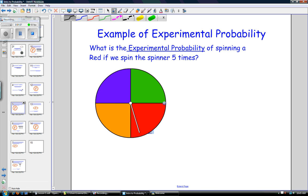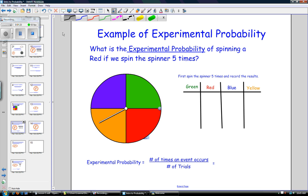So I'm going to do a couple of examples of this. The first example is, what is the experimental probability of spinning a red if we spin the spinner five times? The first thing that I actually have to do is spin the spinner five times.